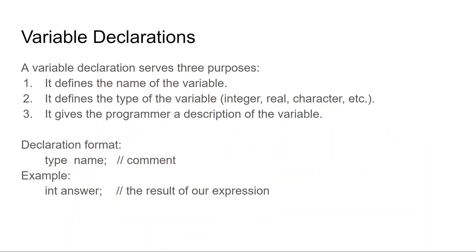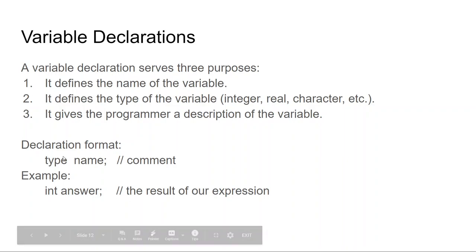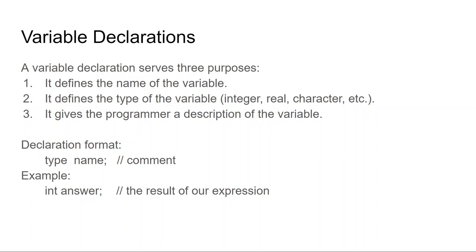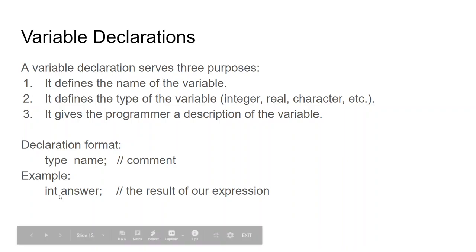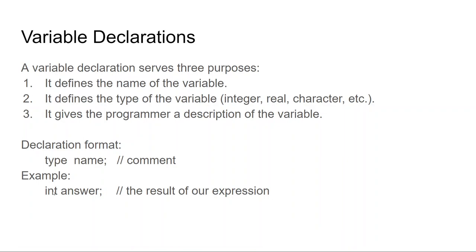Variable declaration defines the name and type of the variable. Declaration format: type then name. So we have int answer — a variable named answer that can only hold integers. This is the number one place beginning programmers get fouled up. Every function is going to return a type; you have to know what type it's returning so you can have a variable ready to hold the value. Int answer means a variable named answer that can only hold integers — not a character, not a Boolean, not a decimal. You can't store 1.2 in answer; you can only store whole numbers.